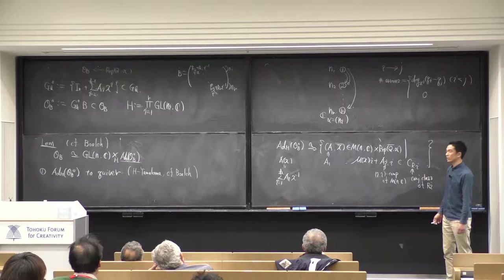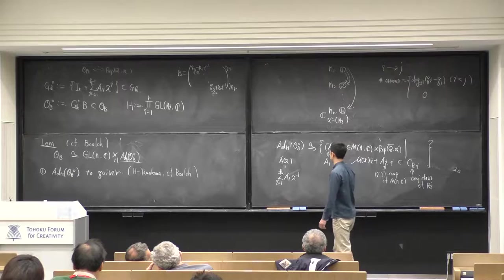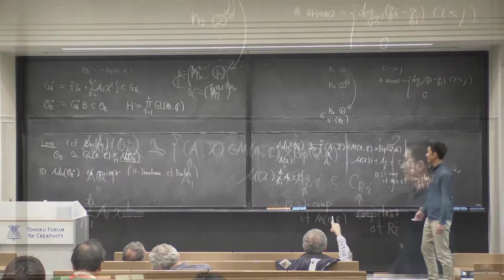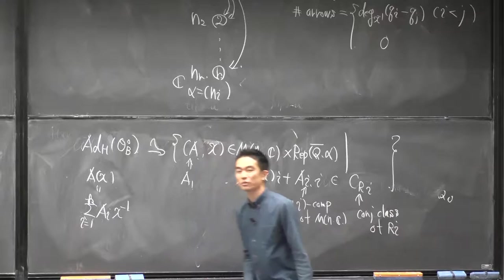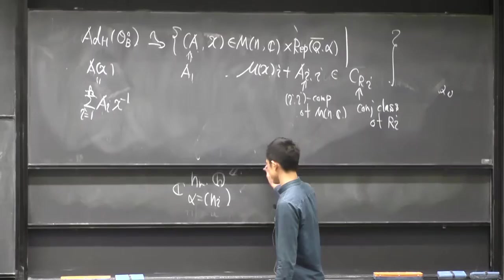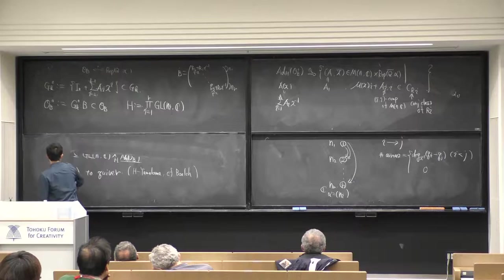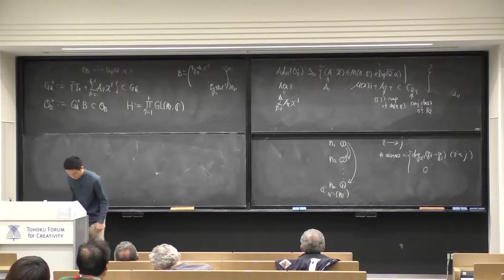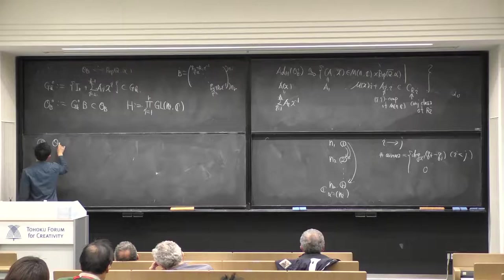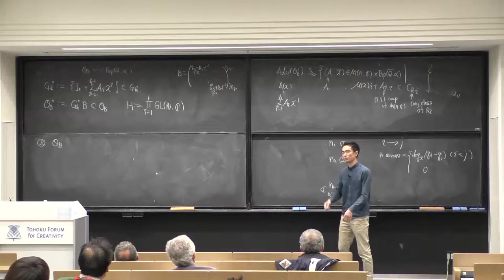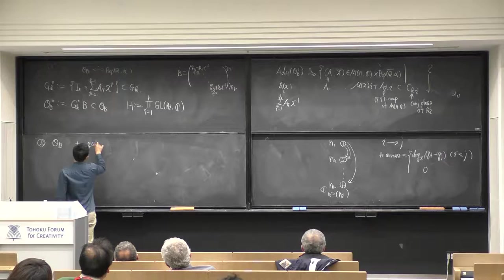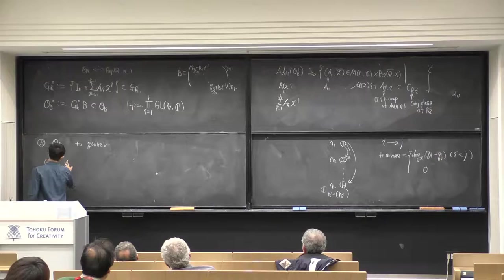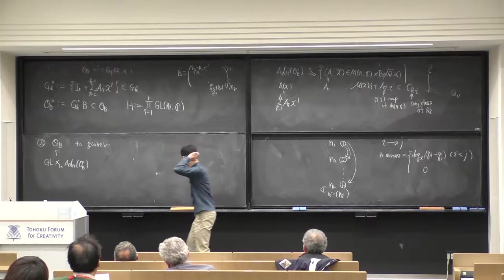Now it just looks local. After that we glue them together. We can show there exists the following isomorphism from the second term of the decomposition of orbit to the representation space. The image of the moment map of x plus some additional term plays the role of the residue matrix, and the additional A of the diagonal block component is living there.